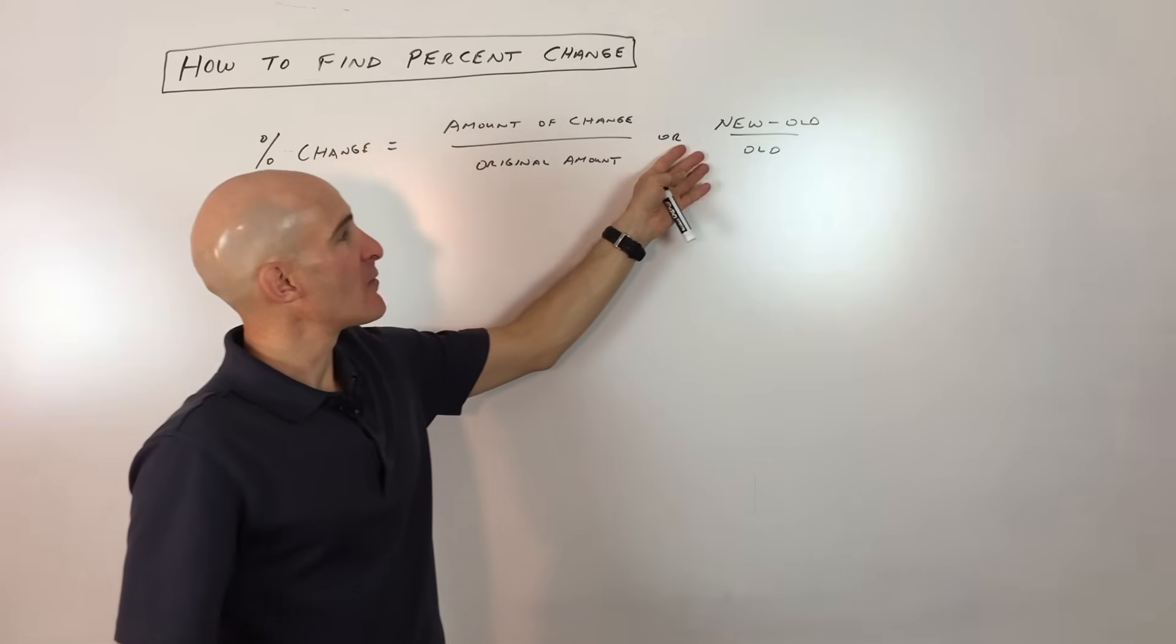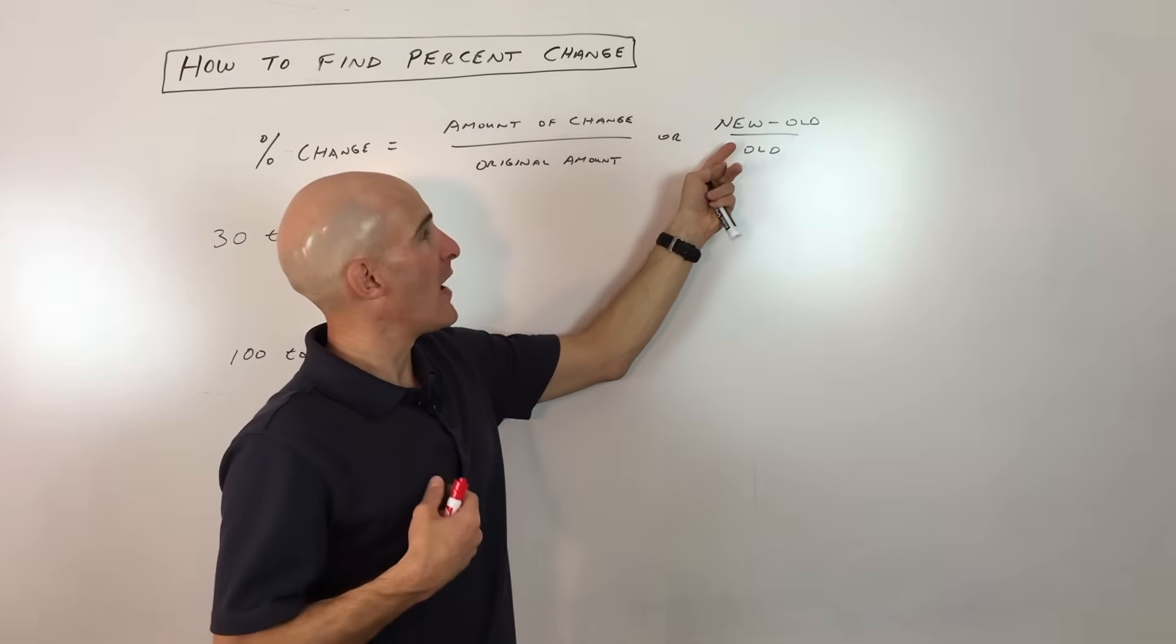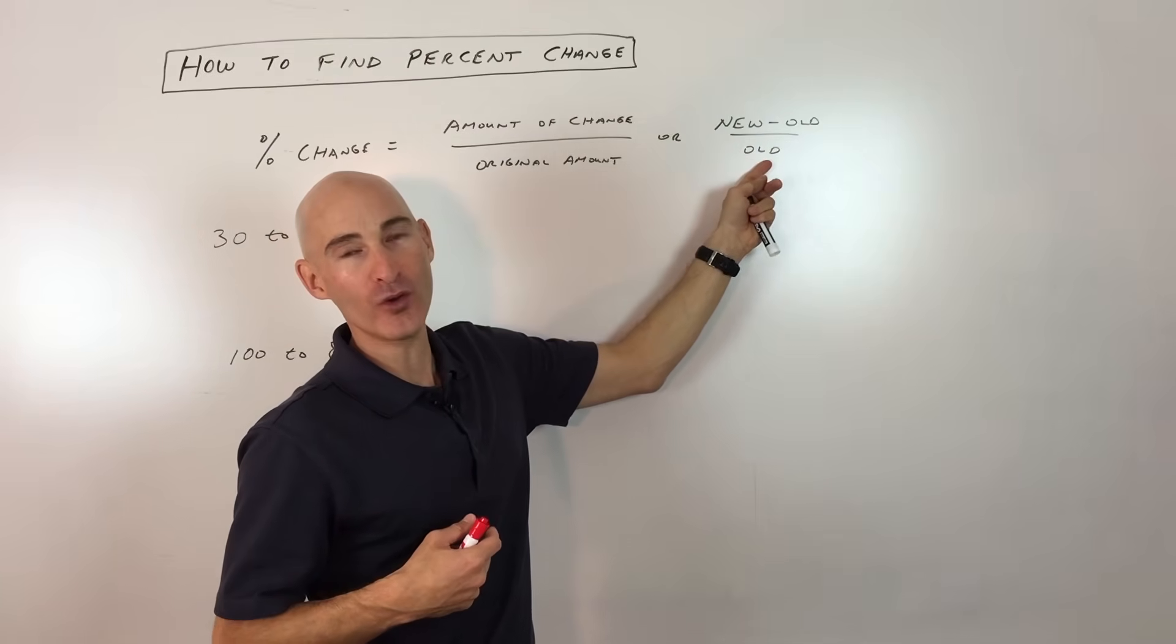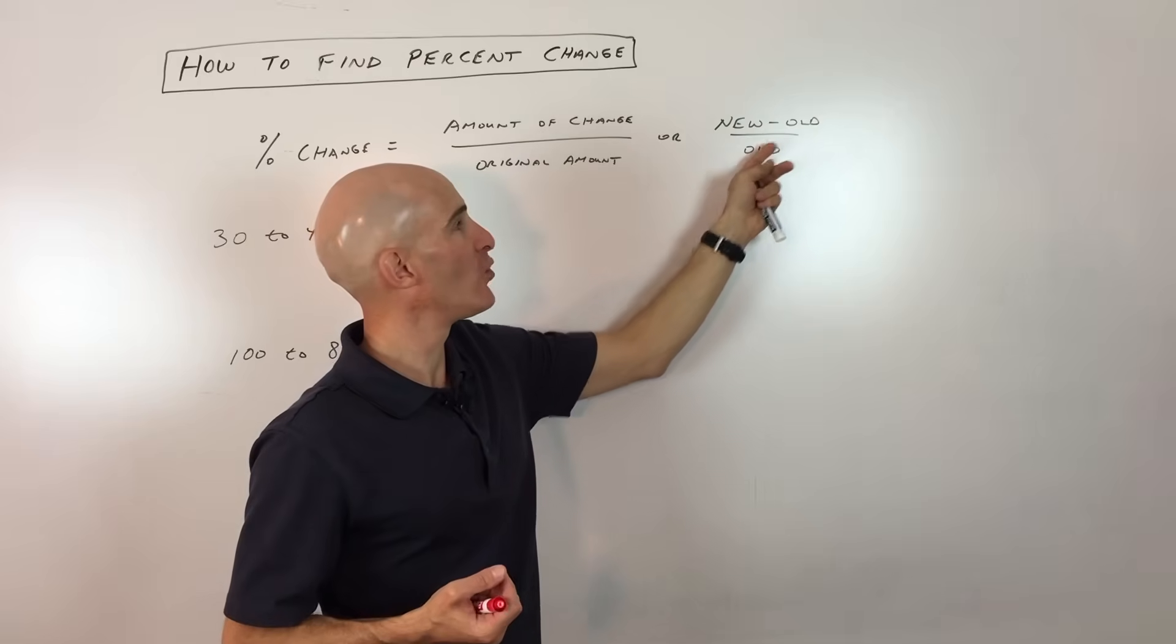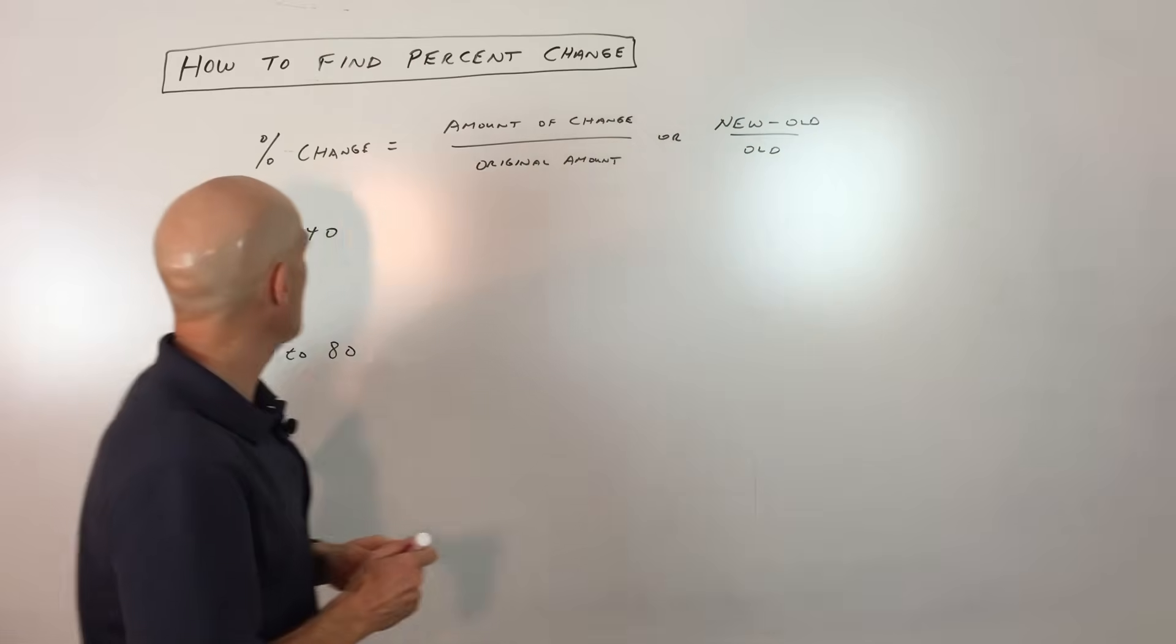Now another way to think about it - and sometimes I just think about it this way in my own mind - I just think it's the new minus the old divided by the old. So just real simple: new minus old divided by old. Now let's look at a couple examples.